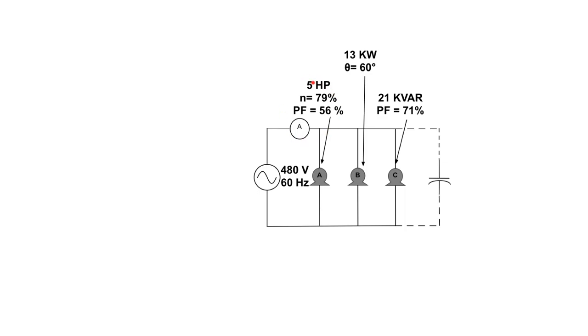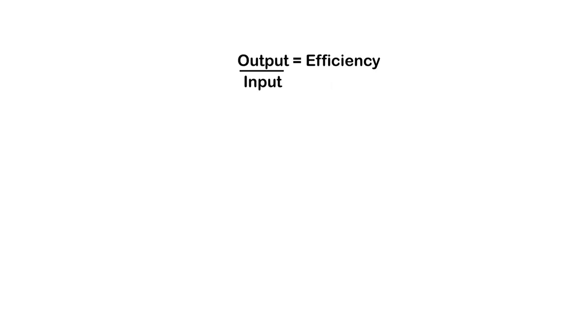We're going to start with our five horsepower motor. First off, we're going to be getting rid of this five horsepower. This five horsepower is the output power, but we actually need to figure out what the input power is in this circuit, and we'll do that utilizing our efficiency. We're going to convert our five horsepower to watts. So five times 746 equals 3730 watts. That's our output power.